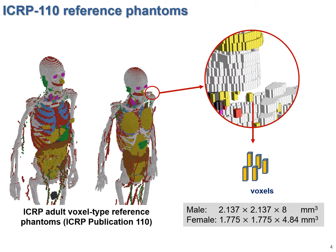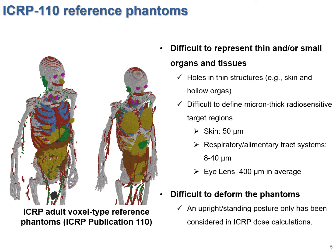However, this kind of voxel type reference phantoms have limitations due to the nature of their voxel structure and their voxel resolution, which are in the order of a few millimeters. For example, these phantoms cannot properly define small and thin organs or tissues such as skin, alimentary and respiratory tract organs, and lenses, whose doses are actually very important in the field of radiological protection. Because of this problem, for several dose-calculation cases which involve small and thin organs, the ICRP has been using additional CSG models. These phantoms were also limited in that they are too difficult to be deformed into different body shapes or postures, and therefore they are confined to a reference body shape in standing posture.